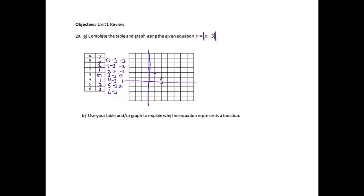2, 1, go to the right 2 and up 1. 3, 0, go to the right 3 and stay put. 4, 1, go to the right 4 and up 1. 5, 2, go to the right 5 and up 2. 6, go to the right 6 and up 3. And I noticed that it made a V, so I'm going to go ahead and connect it. There we go.